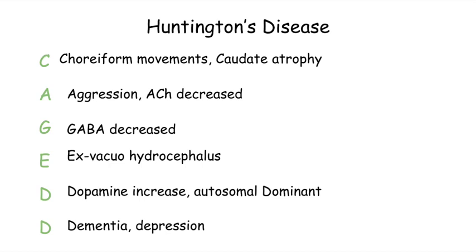The letters in CAGED also remind us of the lab findings. Since Huntington's disease is autosomal dominant, the D's are dominant — so dopamine is increased. Acetylcholine is decreased, and GABA is decreased. Basically everything is decreased apart from dopamine, which is dominant and therefore increased.